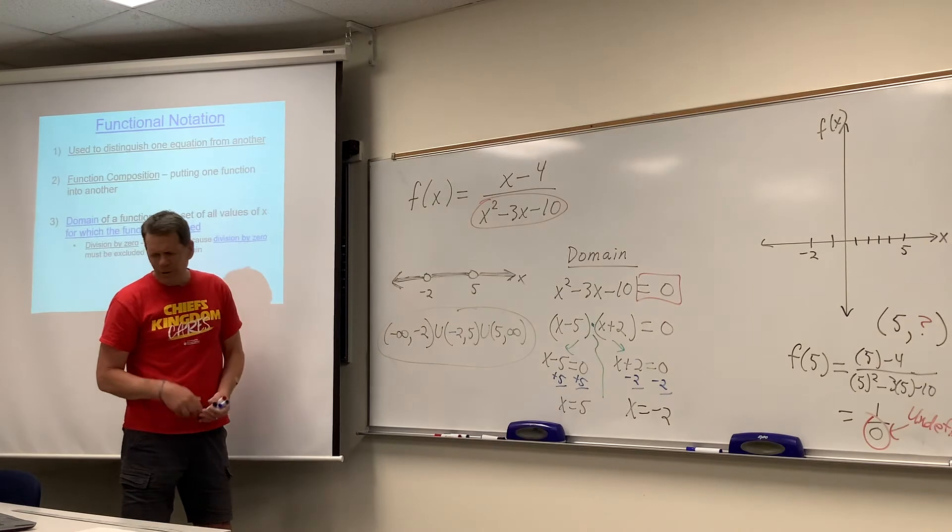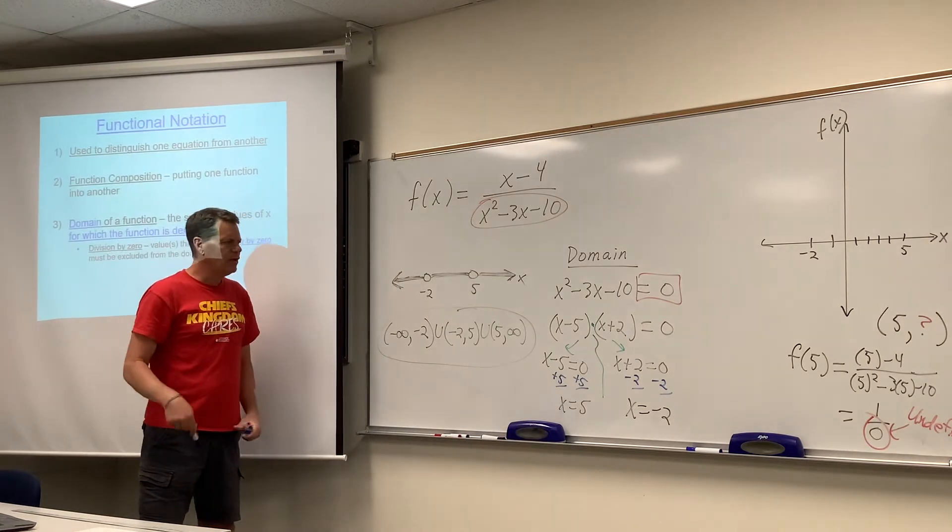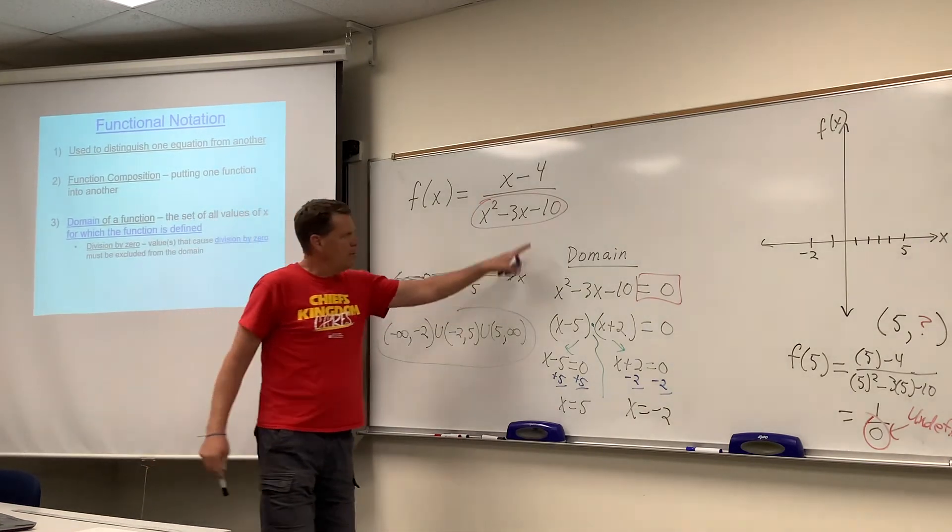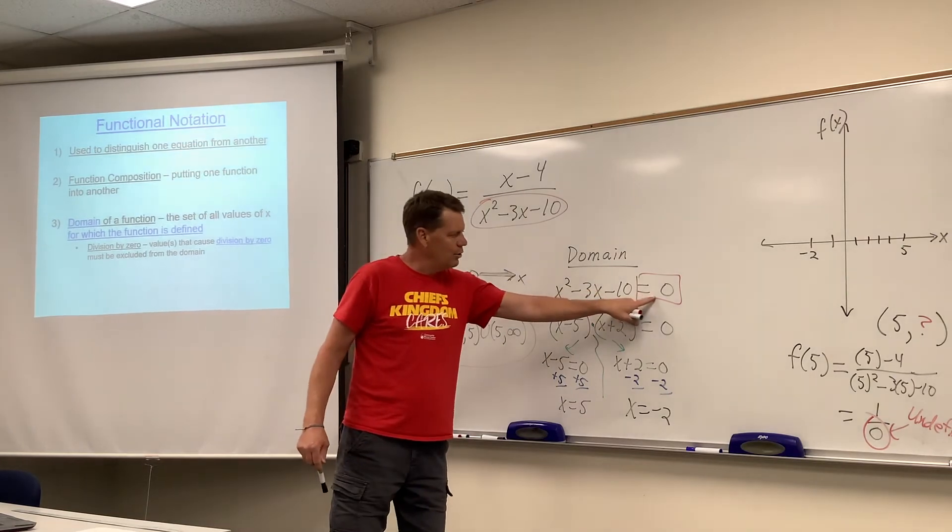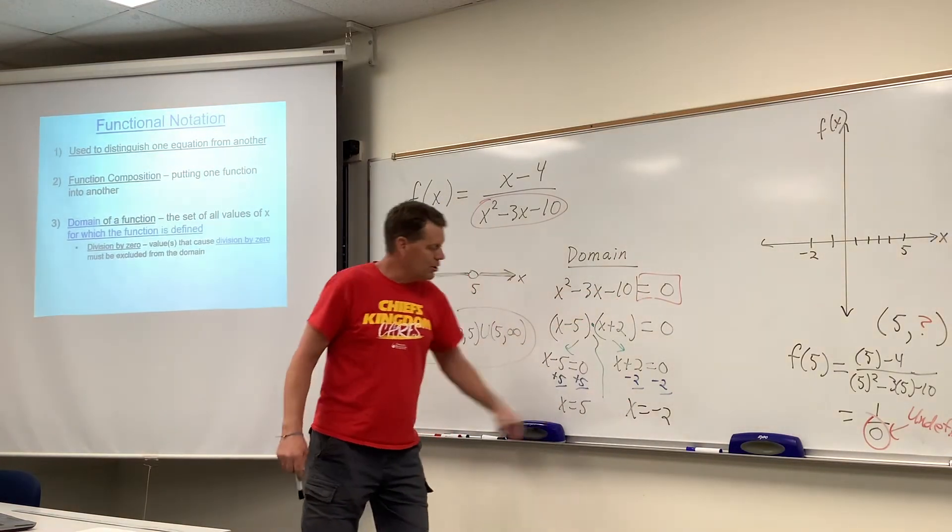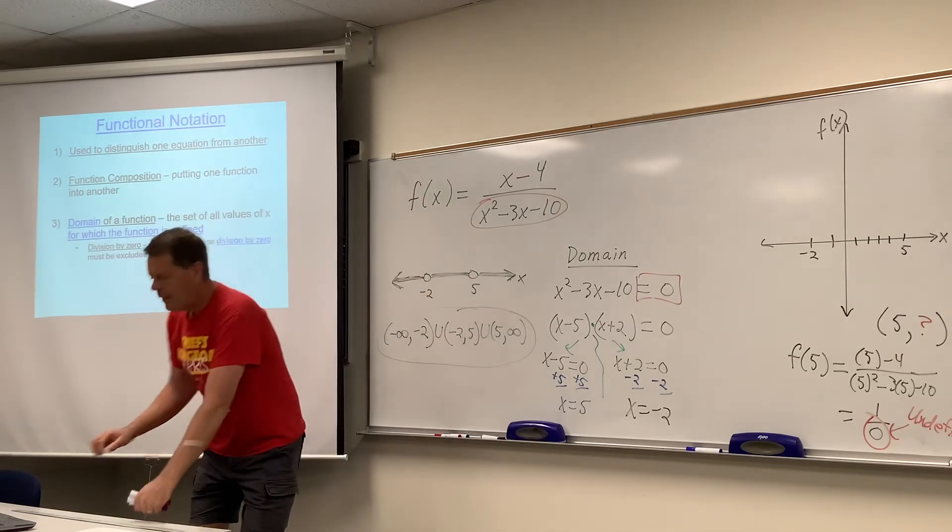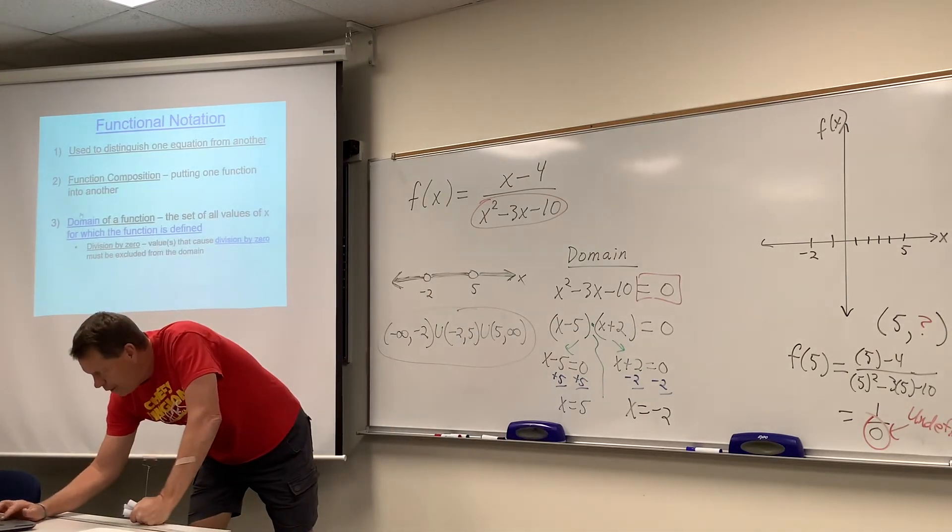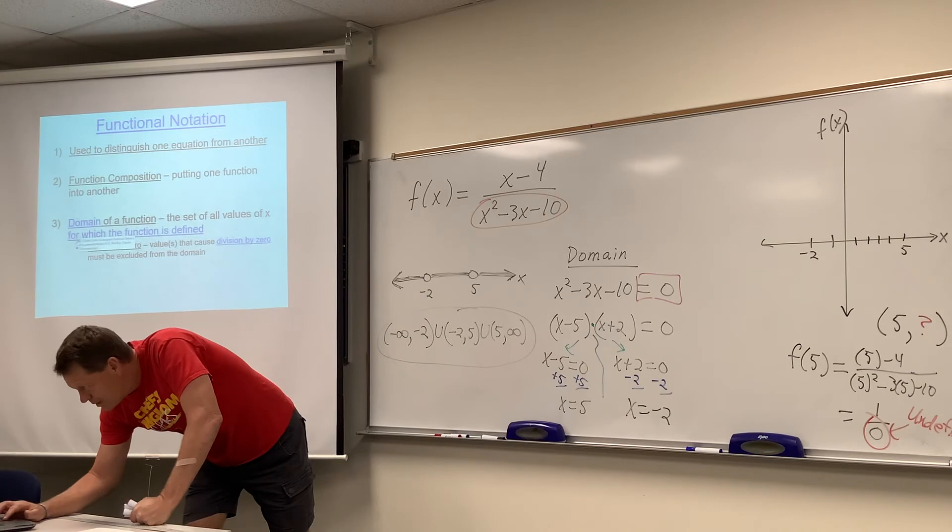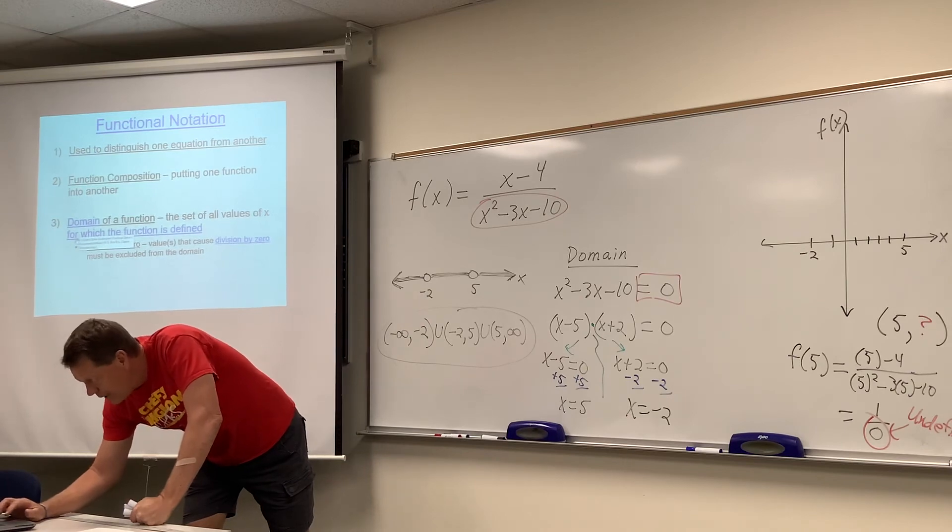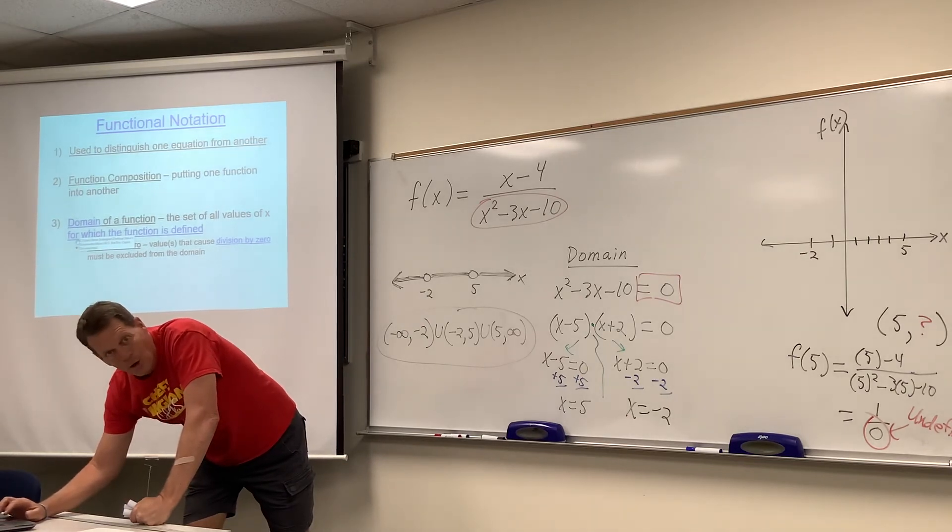So when there's division by zero, find those numbers that cause division by zero by setting your denominator equal to zero. Solve it out. Whatever numbers you find, toss them out. You ain't my domain. So, hopefully you'll enjoy a nice little song from my friend, Eric Clapton. Hope you enjoy it.